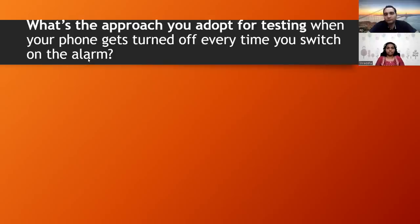Since the phone is getting turned off during alarm setting, I will focus on the alarm functionality and try different inputs — whether the phone turns off at the AM/PM setting or at the specific time being entered. If any logs are created during this crash, I will check those logs and share them with the developer while raising the bug.